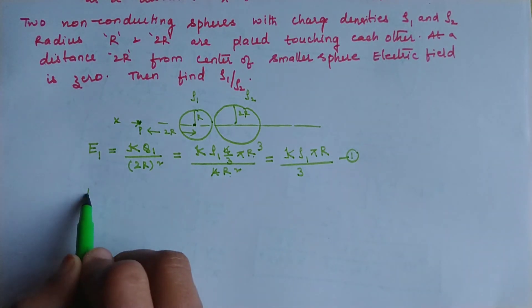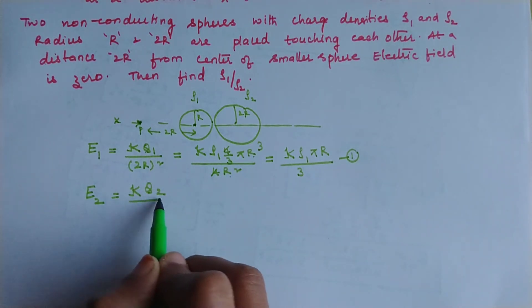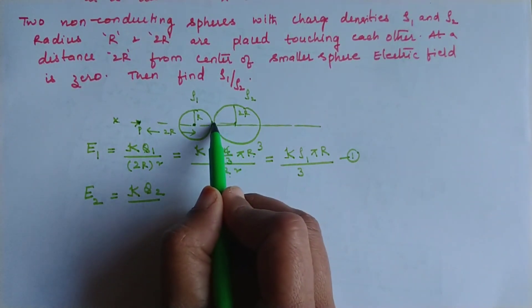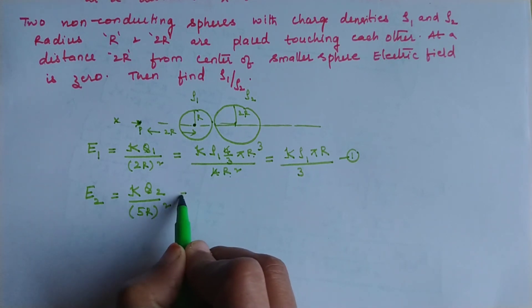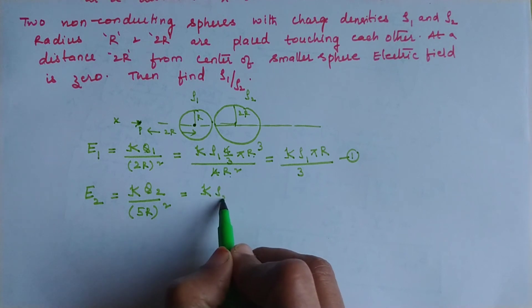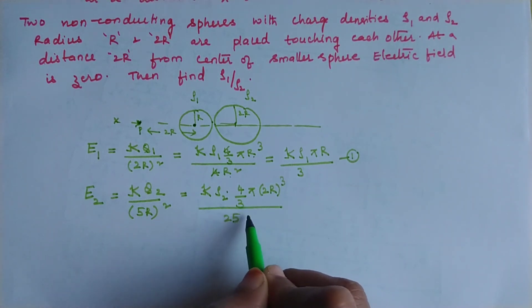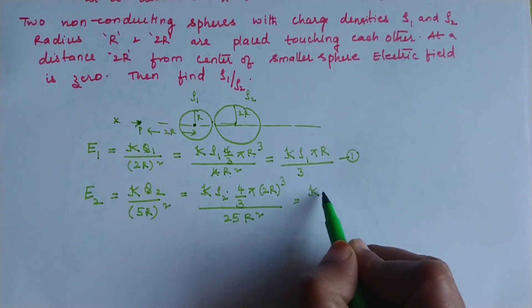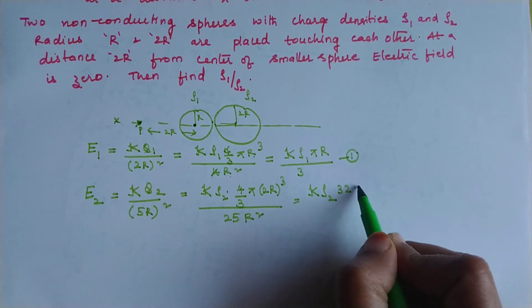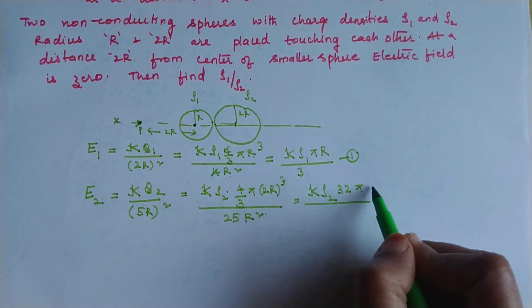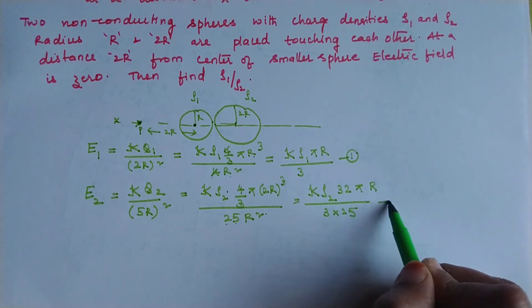For the second sphere (radius 2R, charge density rho₂): the distance from its center to the point is R (to contact point) + 2R + 2R = 5R — actually, the center of sphere 2 is 3R from the contact point, and the point is 2R from center of sphere 1, making total distance from center of sphere 2 = R + 2R + 2R = 5R. E₂ = k × rho₂ × (4/3)π(2R)³ / (5R)² = k × rho₂ × 32πR³/3 / (25R²) = k rho₂ × 32πR / (75).